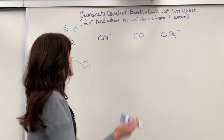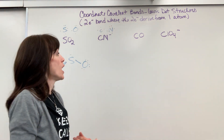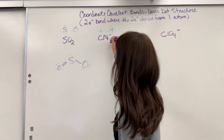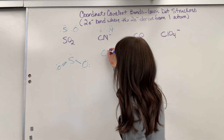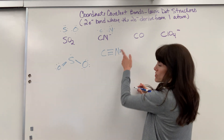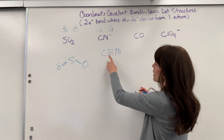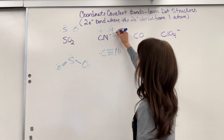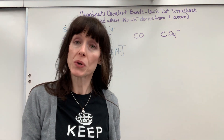Let's look at the cyanide ion. Carbon has four valence electrons and nitrogen has five valence electrons. Actually, this doesn't have a coordinate covalent bond — it's just a really easy regular example. Carbon shares three electrons and nitrogen shares three electrons, forming a triple bond. Nitrogen senses eight, and carbon senses seven, but the negative ion charge provides the extra electron, giving carbon an octet. That's cyanide — not a coordinate covalent bond.